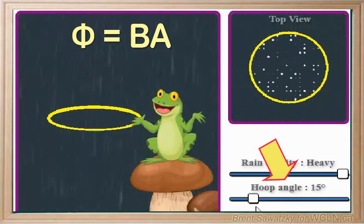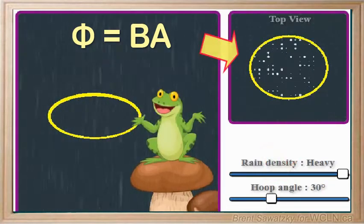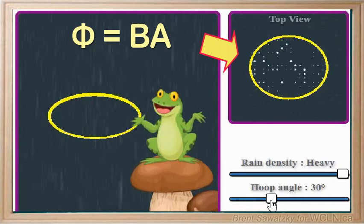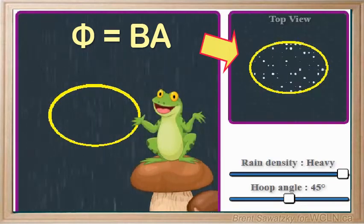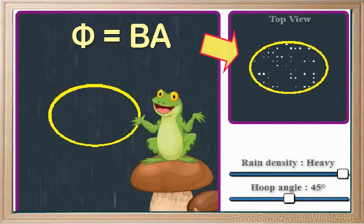Let's adjust the angle of our loop from the horizontal, and we can move to a top view, and see that the loop from the falling rain's point of view is no longer a circle. The effective area, or shadow area, like a shadow that it would make on the ground, is now an ellipse. And we can see that the ellipse has a smaller area for the rain to pass through, as compared to our original full circle.